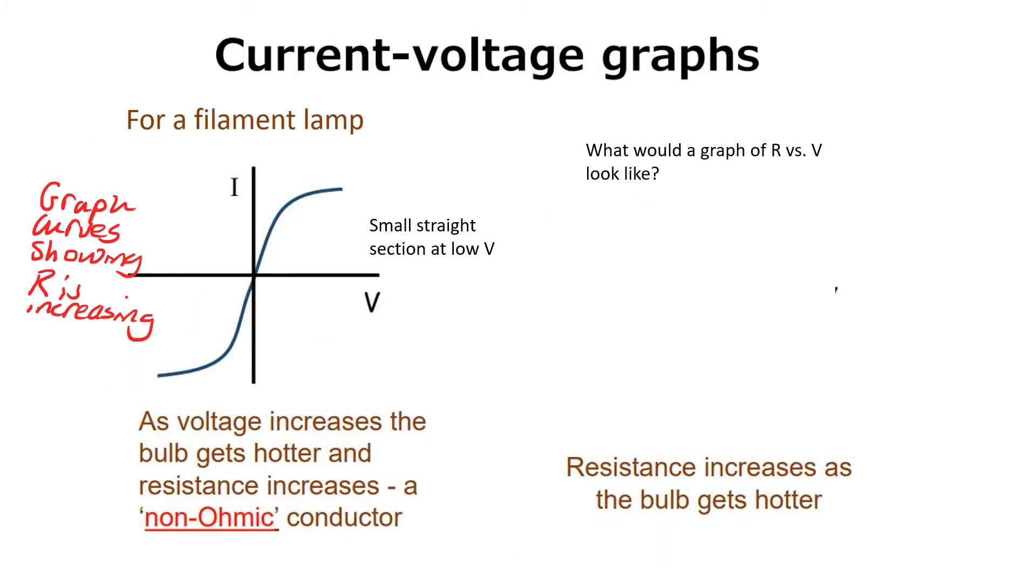For the filament lamp we get something different when we plot I against V. We can see the graph is curving, showing that resistance is increasing. As voltage increases the bulb gets hotter and resistance increases. This is a non-ohmic conductor, meaning it doesn't follow Ohm's law. What would a graph of R against V look like for the filament lamp? At low voltages we might see a short horizontal section where resistance is constant, but then on either side we'd see resistance increasing as we increased potential difference.